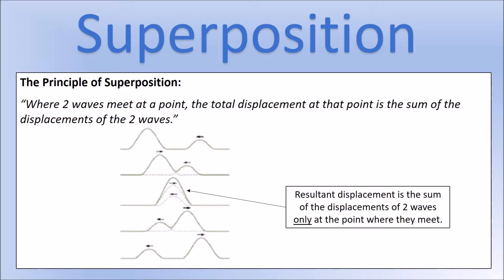In this video we're going to talk about how you form stationary waves and some different applications of stationary waves. But to understand stationary waves you first need to understand the principle of superposition, which is very simple. It states that when two waves meet at a point, the total displacement at that point is the sum of the displacements of the two waves. Once they've passed through each other they go back to being separate waves again.